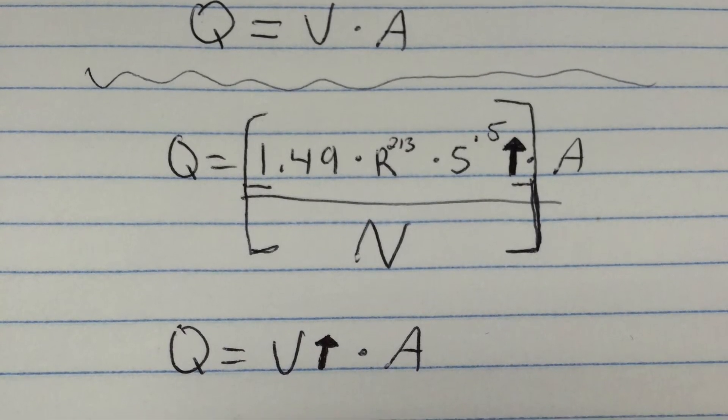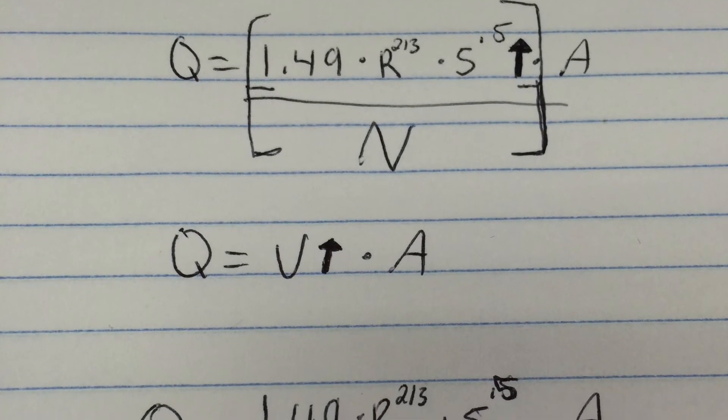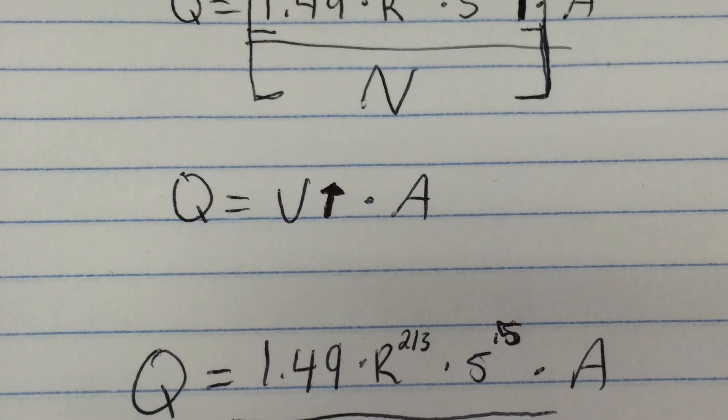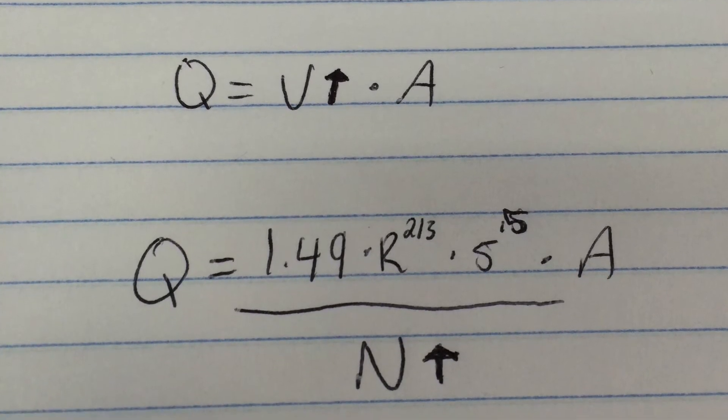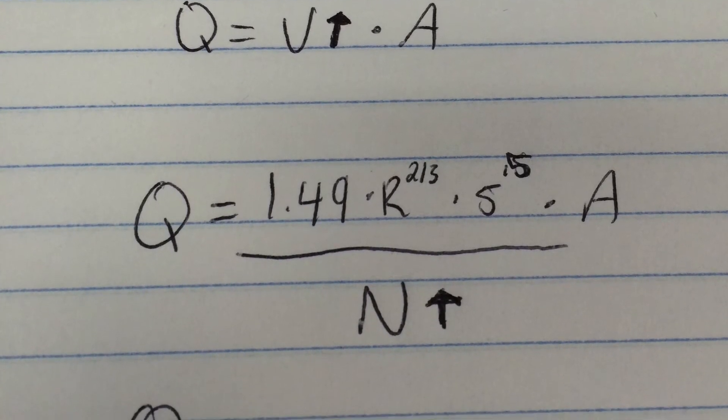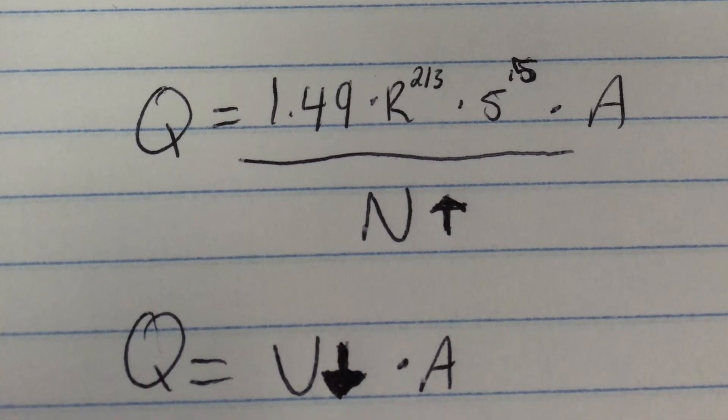As we've seen so far, slope and Manning's n have very different effects on our overall flow rate. Previously we saw that by increasing slope, our velocity goes up, and in turn so does our flow rate. On the other hand, if we increase our n value, our velocity decreases and therefore gives us a slower flow rate. These direct and inverse relationships are important to keep in mind when thinking about Manning's equation.